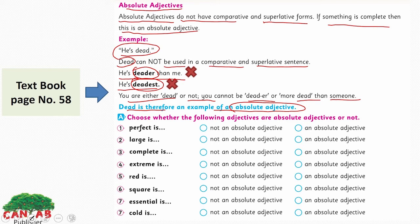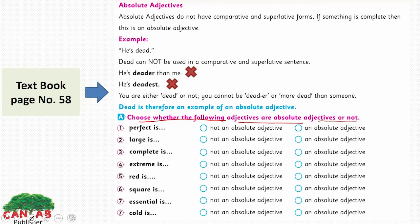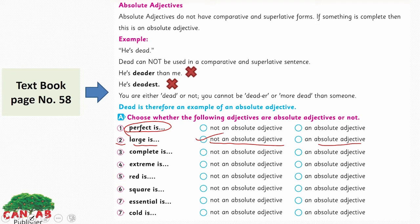So that is an example of an absolute adjective. Now let's do the exercise — choose whether the following adjectives are absolute adjectives or not. The first one: 'perfect' — you cannot say 'perfecter' or 'perfectest.' It has no superlative or comparative degree, so it is an absolute adjective. The second one: 'large' — this is not an absolute adjective because it has comparative and superlative degrees. Comparative degree is 'larger.' The third one: 'complete' — complete is an absolute adjective because it has no comparative and superlative degree.